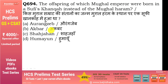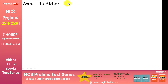किस Mughal सम्राट की संतानों का जन्म Mughal harem के स्थान पर एक Sufi khanqah में हुआ था? — Option B. एक grammar note: 'offspring' का कोई plural नहीं होता — offspring का plural offspring ही होता है, जैसे spacecraft, aircraft, sheep, deer.